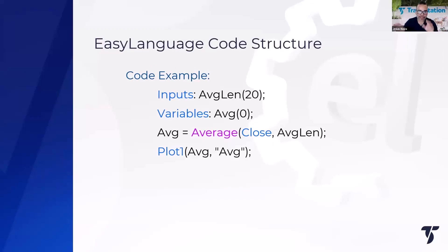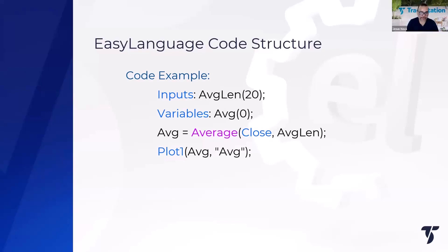That's the structure every indicator in TradeStation follows. As you get more familiar with EasyLanguage and open indicators and strategies, you'll see this same structure in the code. This information is also available as a PDF — it'll be shared in the chat as a reference guide.